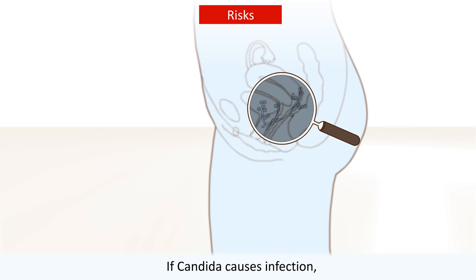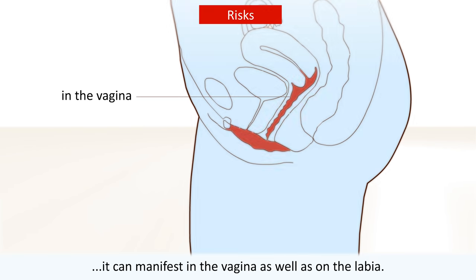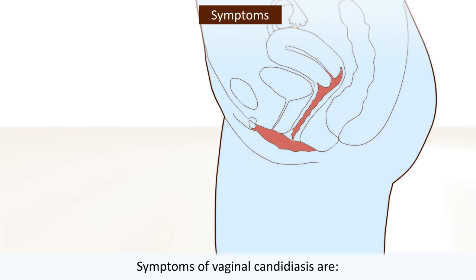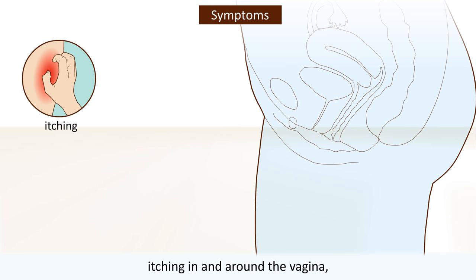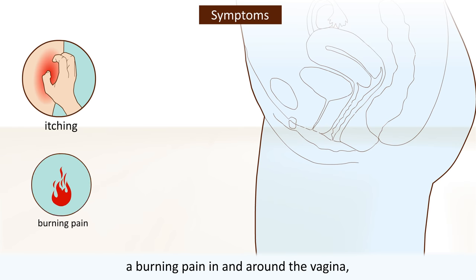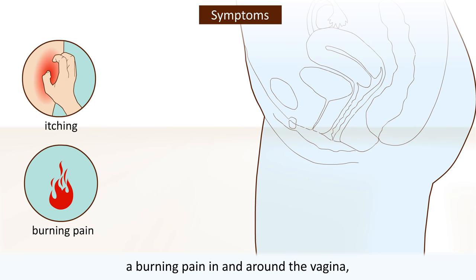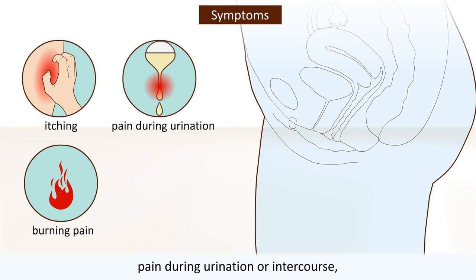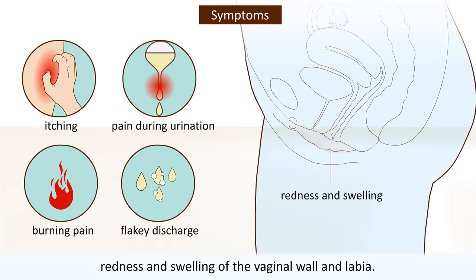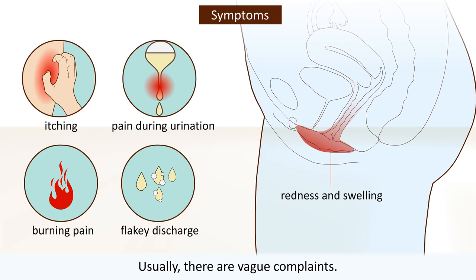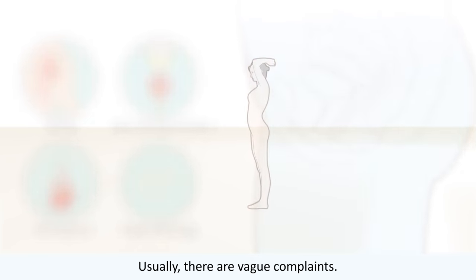If Candida causes an infection, it can manifest in the vagina as well as on the labia. Symptoms of vaginal candidiasis are itching in and around the vagina, a burning pain in and around the vagina, pain during urination or intercourse, plenty of white and flaking vaginal discharge, and redness and swelling of the vaginal wall and labia.